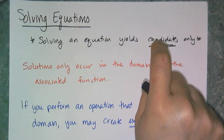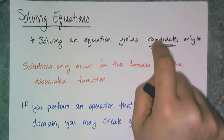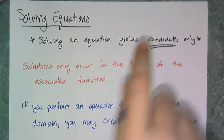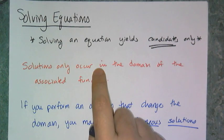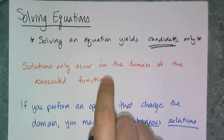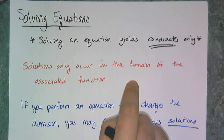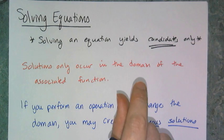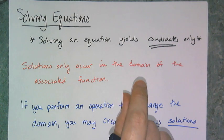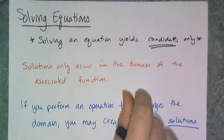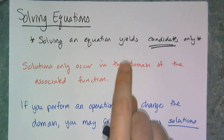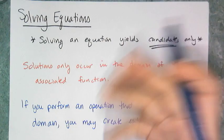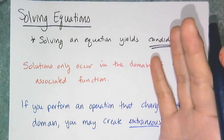Because the one thing I didn't tell you — now that we're at the end of Algebra 1, I can — solutions only occur in the domain of the associated function. So your answer for x has to be within the domain of your original function. For linear and quadratic, because their domains are all real, you can get whatever real number you want.